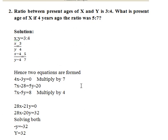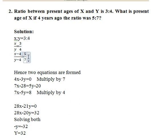The second question: The ratio between present ages of X and Y is 3 is to 4. What is the present age of X if four years ago the ratio was 5 is to 7? So X to Y equals 3 to 4, and four years ago, X minus 4 to Y minus 4 equals 5 to 7.